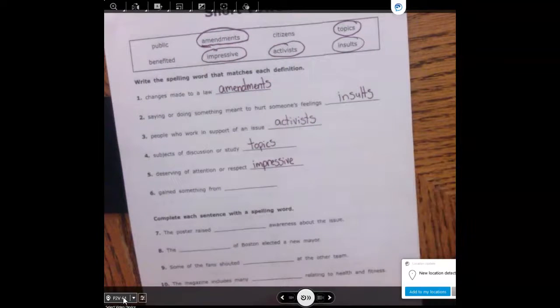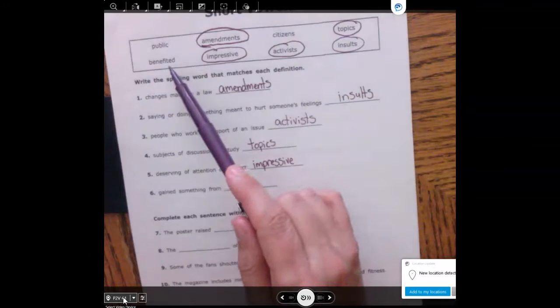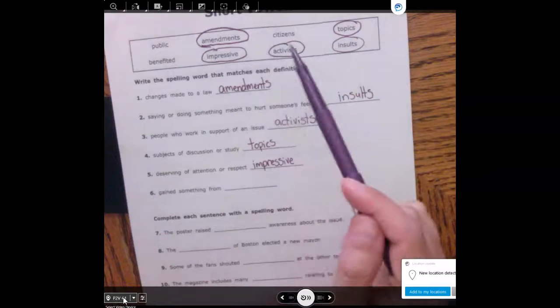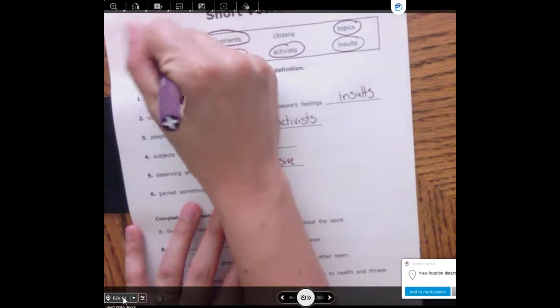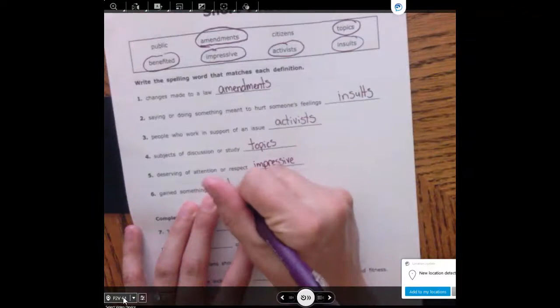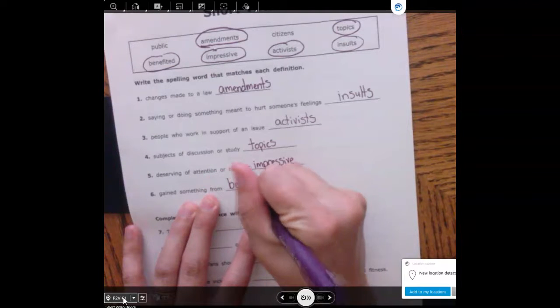If I gain something from it, have I benefited? Have I public or have I citizen? I've benefited. If I gain something from it, I benefit from that.